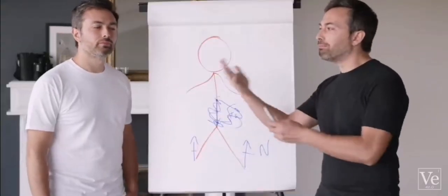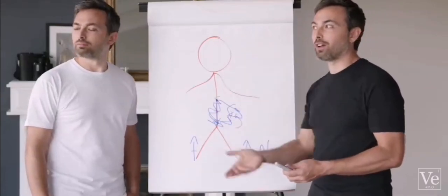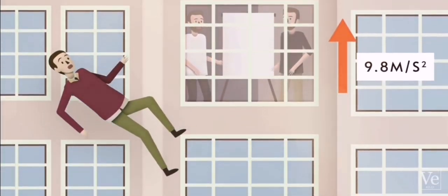What you need, if you really want to measure your acceleration, is someone in an inertial frame of reference, like the guy who fell off the roof. And he would see you accelerating up at 9.8 meters per second squared.